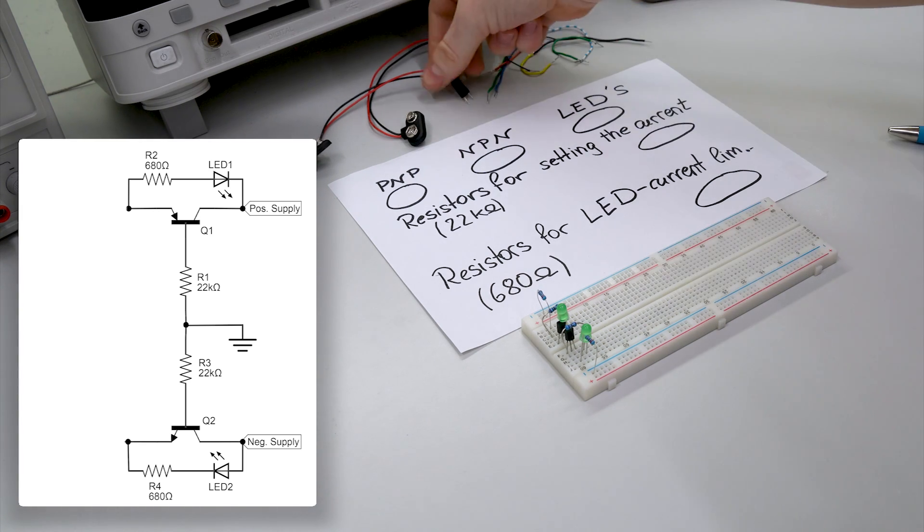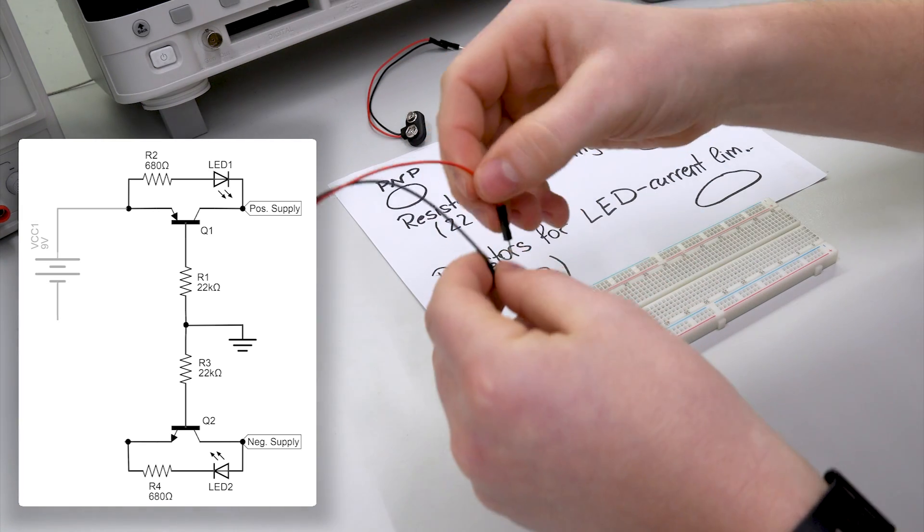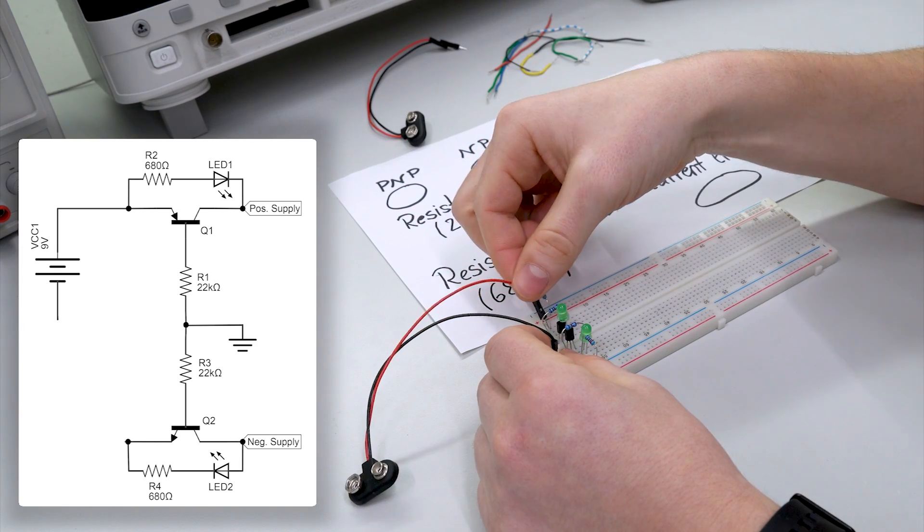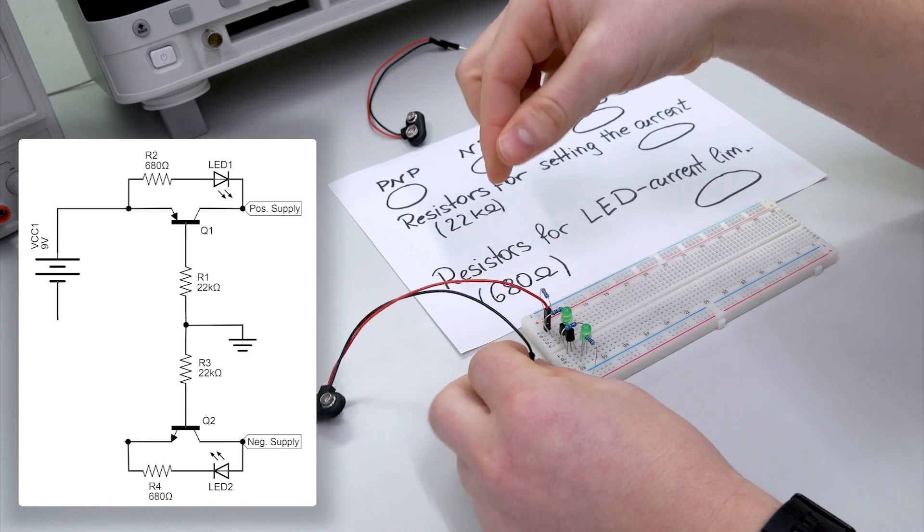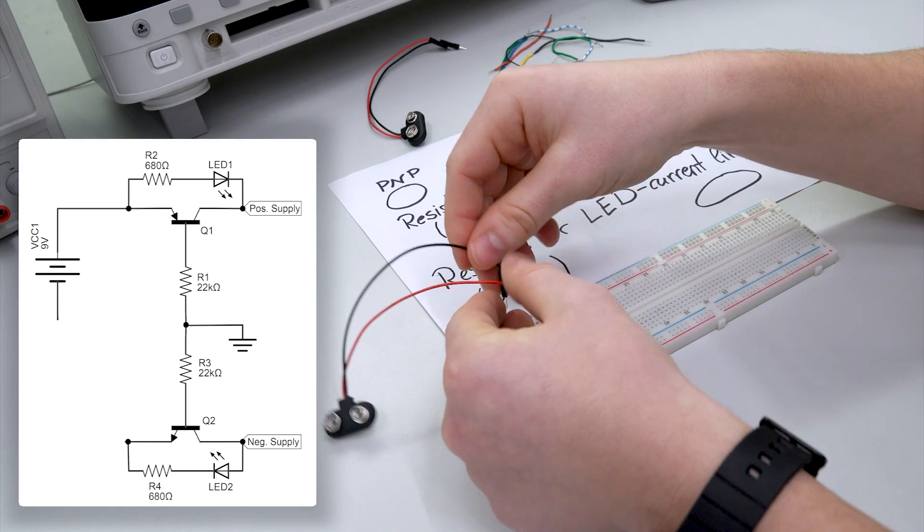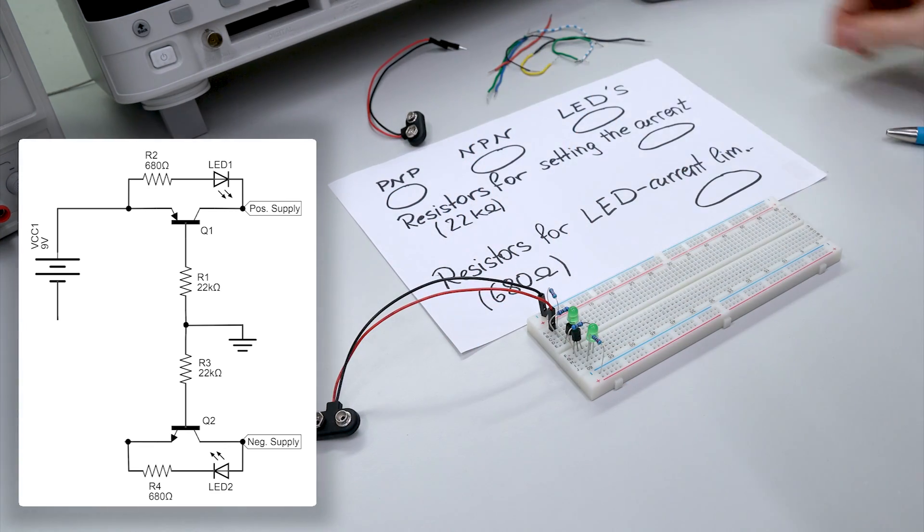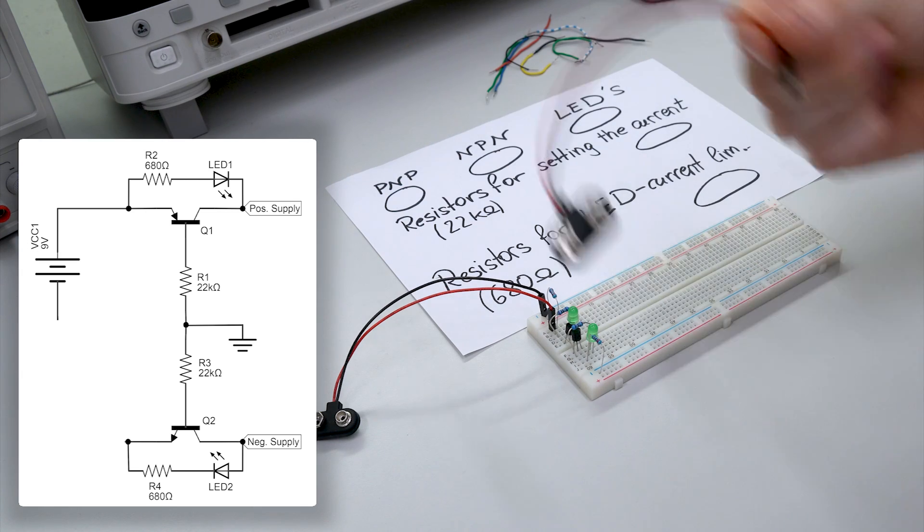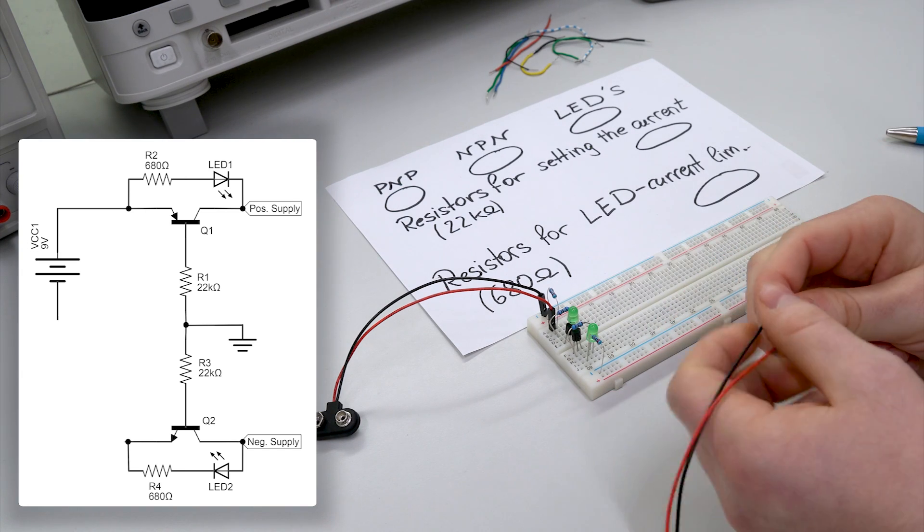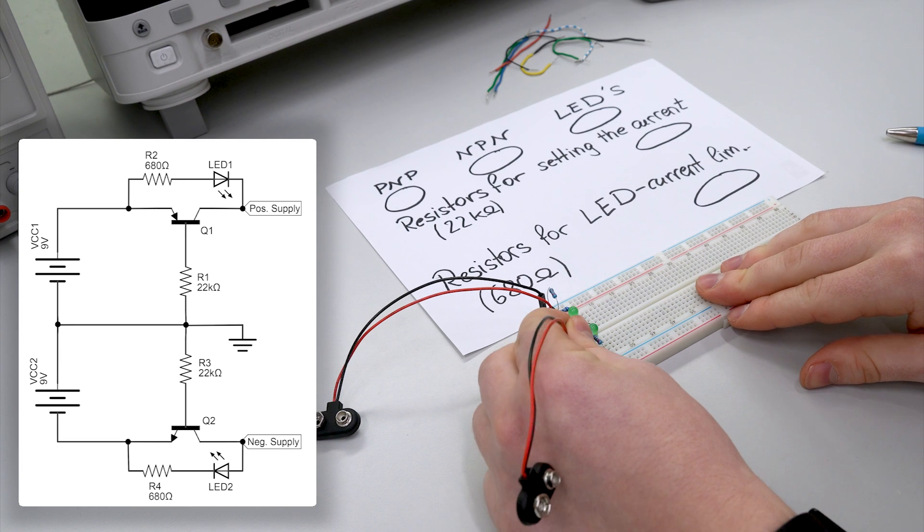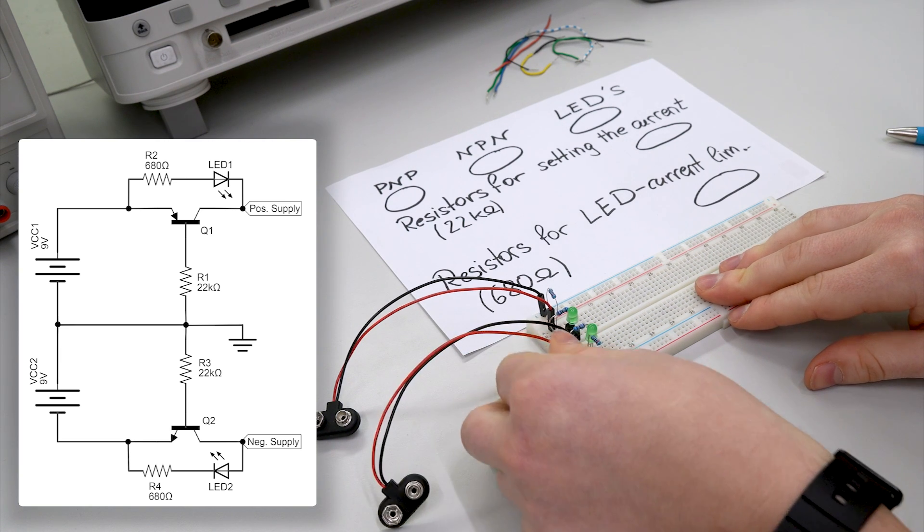Now we connect the battery clips. So the battery clip for the positive supply. The positive supply of the battery, first battery, goes at the emitter of the transistor and the negative supply to the common ground. For the negative supply it's different. Now the ground, the black wire goes to the emitter and the red wire to the ground.